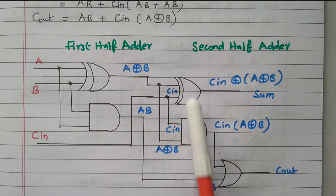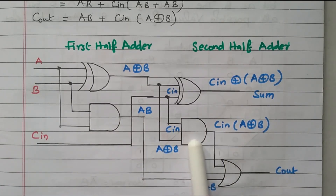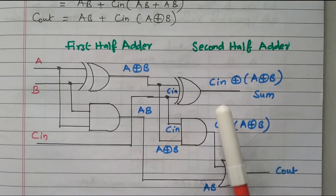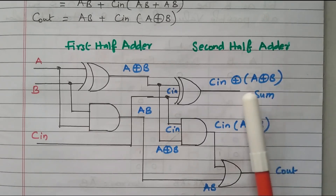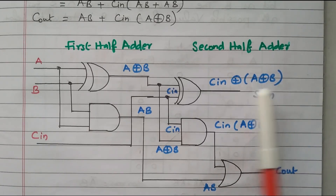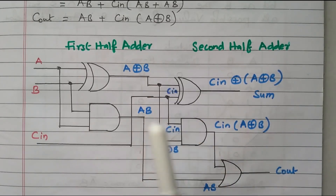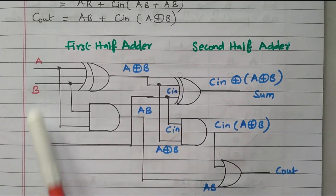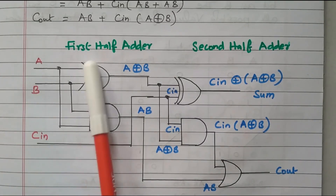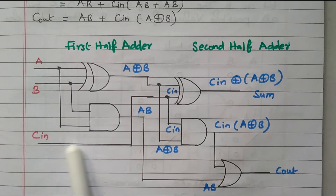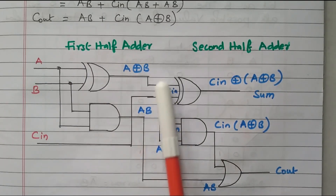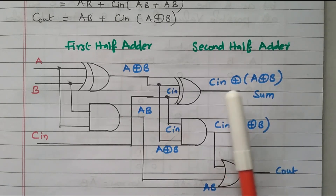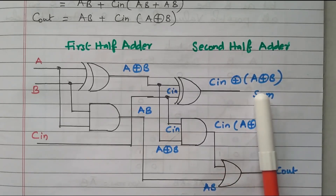Now a second half adder is needed. The expression for the full adder sum is Cin XOR (A XOR B). The value A XOR B is already available from the first half adder output. Cin is the third input. So the second half adder takes A XOR B and Cin as its two inputs, producing Cin XOR (A XOR B) as the sum output.